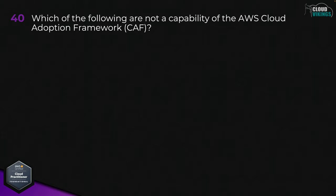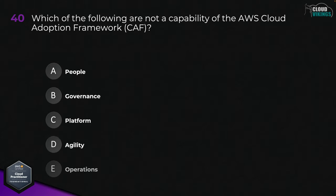Question forty: which of the following is not a capability of the AWS Cloud Adoption Framework, or CAF? Options are: A, people; B, governance; C, platform; D, agility; or E, operations. The correct answer is D, agility.